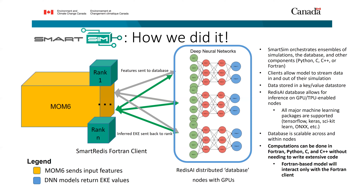Every time step, each MOM6 rank sends its subdomain features to the database. The database queues up an inference of the neural network to predict eddy kinetic energy, then sends the data back to MOM6. This Redis AI distributed database stores data in a key-value data store, supports all major machine learning packages — we used TensorFlow but it also supports Keras, scikit-learn, etc. The database is scalable; we used 16 nodes and have scaled it to 64. Critically, the Fortran-based model only interacts with a Fortran client — it doesn't need to know anything about Python or C++ — yet you can connect Python, C, and C++ code because they all share data within this one centralized database.